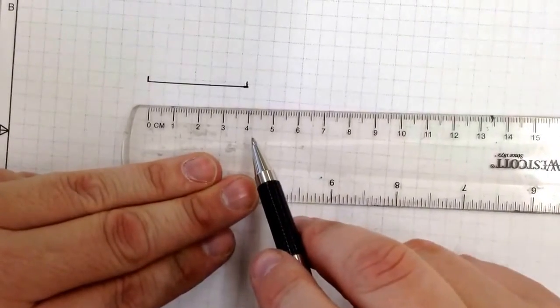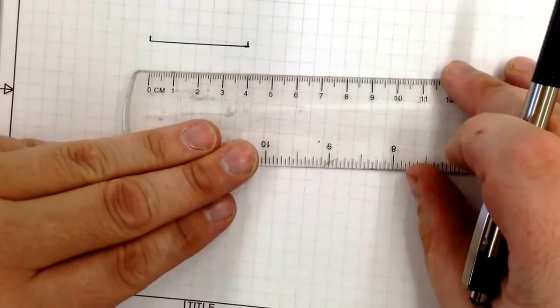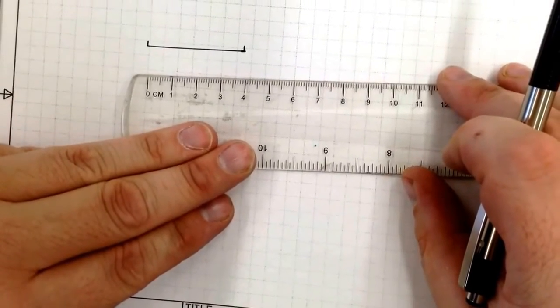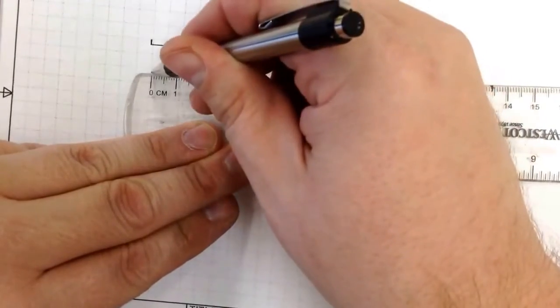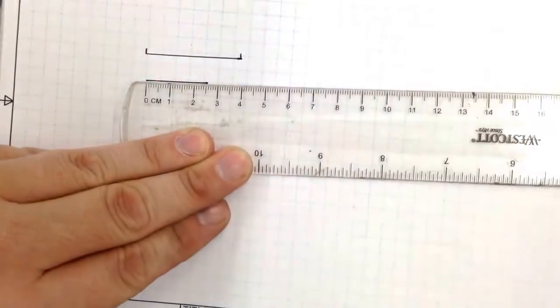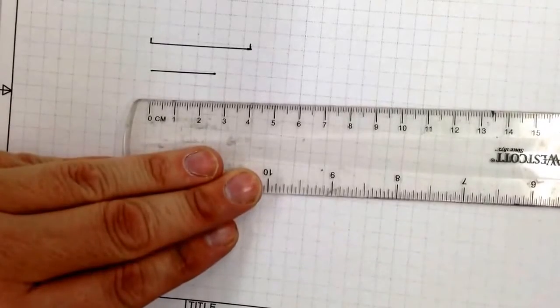Starts at zero, goes to four. Now let's say I have something two and a half centimeters. Start from zero, go to two and a half. That is two and a half centimeters right there.